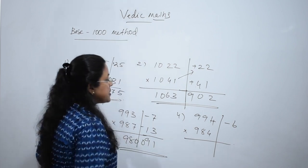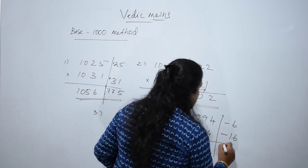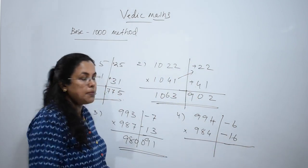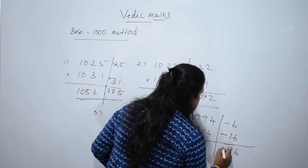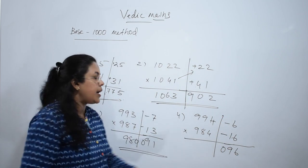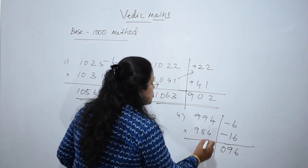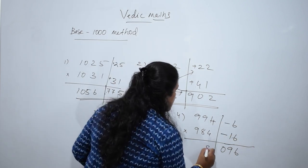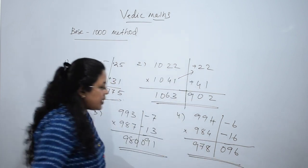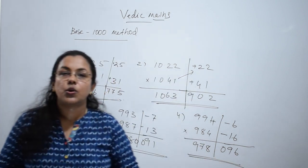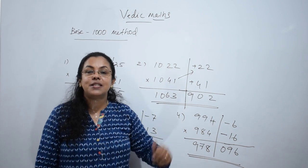Here deviation is minus 6 and minus 16. This is 96, put 0. Subtract the two. Final answer is 978096. Hope the concept is clear to you now.